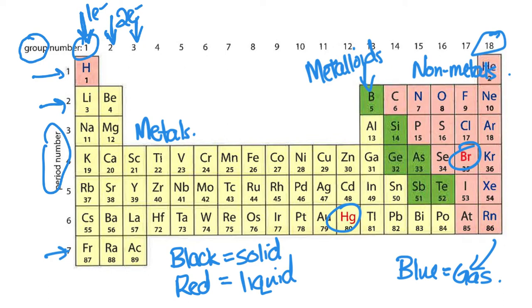And then going across, so 13 has 3, 14 has 4, and so on all the way up to 18 which has 8 valence electrons. Transition metals are a bit different, so we'll talk about that in a different video.